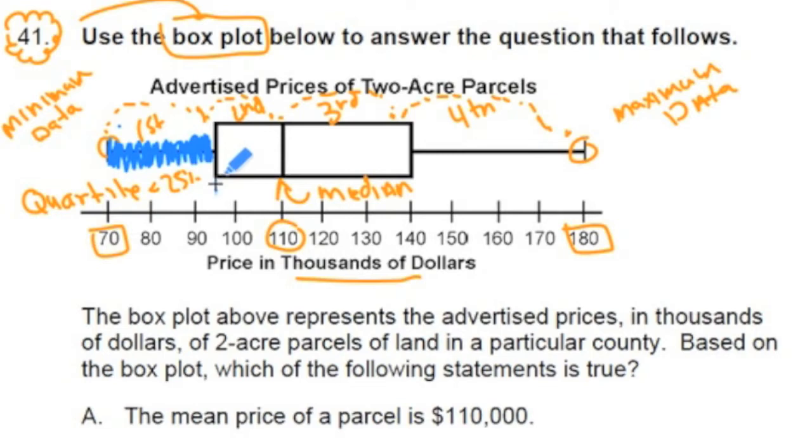The first quartile ends where the rectangle begins, so that's this right here. That looks like it's between 90 and 100, so let's call that $95,000. That means in our first section here, 25% of the data points are less than or equal to $95,000. Now let's just use this as a working base to read this problem.